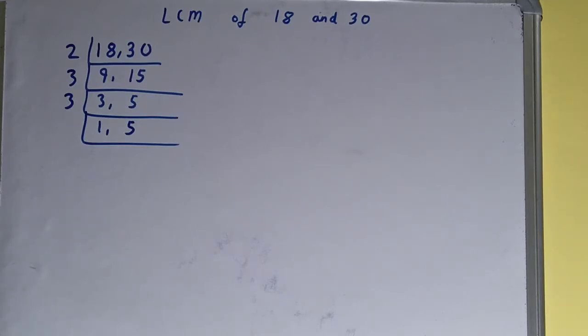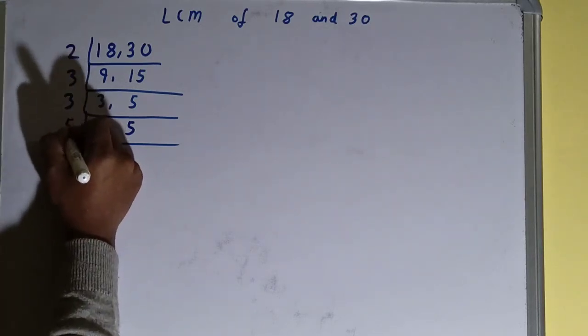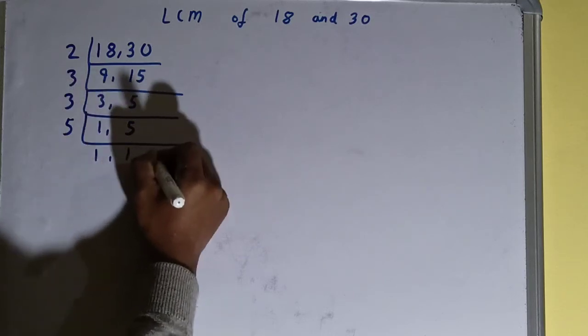Now again, is any of the number divisible by 3? None of the numbers, so we'll go to the next prime number, that is 5. And this number is divisible by 5, so we'll divide. And on dividing, we'll have 1 comma 1.